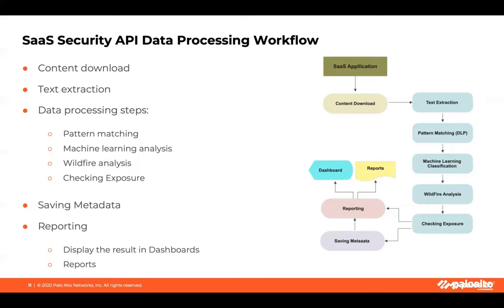Now let's take a look at the flow. First, it downloads the content and extracts the text. Then it sends it to the data processing module where it performs pattern matching, machine learning analysis, wildfire analysis, and checking exposure level. After these steps are completed, it saves the metadata and deletes the data. The next and final step is to display the findings and provide reporting options. We can create reports from the report section of SaaS Security, where we have several reports designed for different purposes.